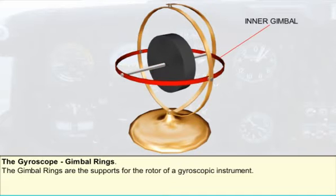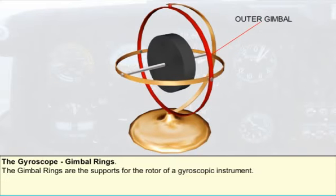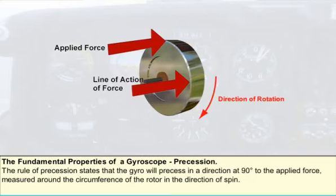The rotor shaft or spindle is supported by bearings in a ring called the inner gimbal. The inner gimbal is in turn supported by bearings mounted inside the outer gimbal, which can rotate on bearings in the frame. If an external force — or more correctly, torque — is applied to change the direction of the rotor axis, the gyro resists angular movement in the plane of the torque applied.